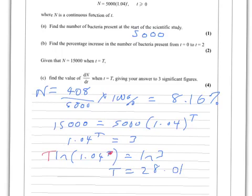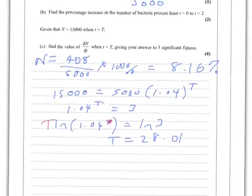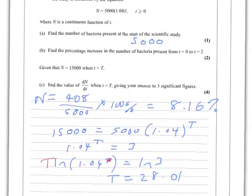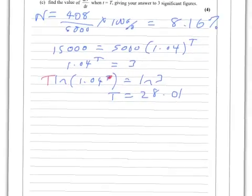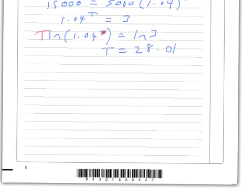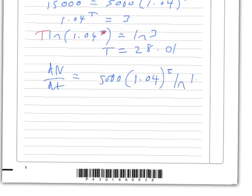We're asked to find the value of dN/dt when t=T, so we need dN/dt. Let me make some space. We've got our original equation, N = 5,000(1.04)^t. So dN/dt = 5,000 times 1.04^t times ln(1.04).